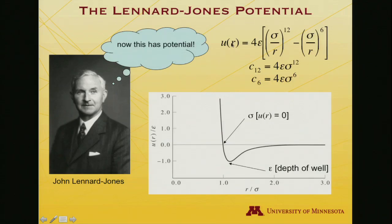His equation says that U of R equals 4 times epsilon times the quantity sigma over R, all raised to the twelfth power, minus sigma over R raised to the sixth power. You see the R to the twelfth term in a denominator and the R to the sixth hiding in a denominator. The relationship between the C₁₂ and C₆ coefficients and these new epsilon and sigma coefficients are shown here. C₁₂ is 4ε σ¹² and C₆ is 4ε σ⁶.